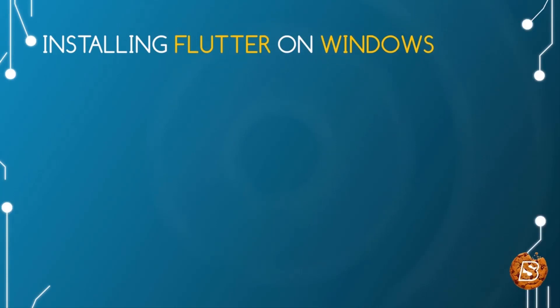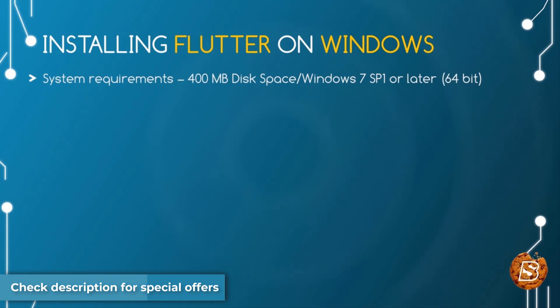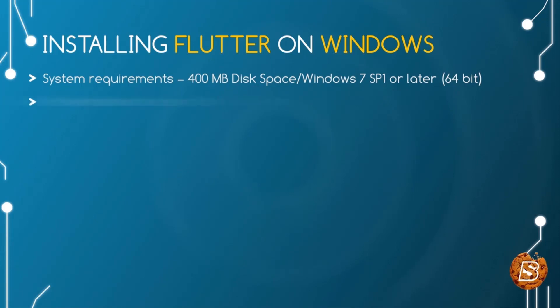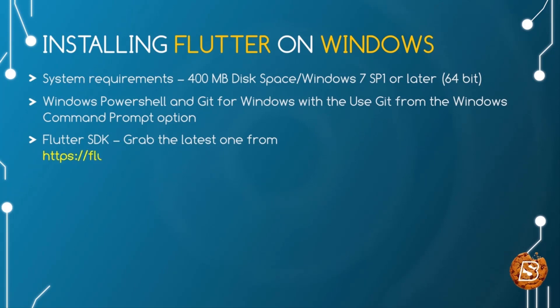Now that we have seen what Flutter is and why we will be using Dart, it's time to see how we can install Flutter on various platforms. We'll start with Windows and then cover macOS. For Windows, the basic system requirement is 400 MB of disk space, Windows 7 SP1 or later 64-bit, Windows PowerShell, and Git for Windows installed with the option 'Use Git from the Windows command prompt.' We then need to have the Flutter SDK, available as a zip file from flutter.io/docs/get-started/install/windows.